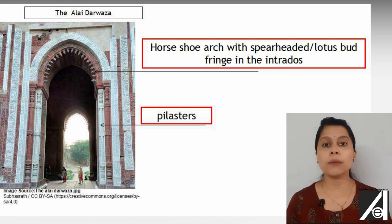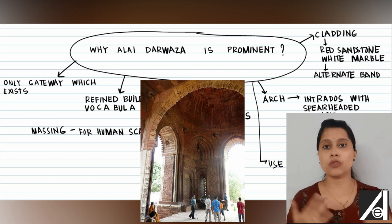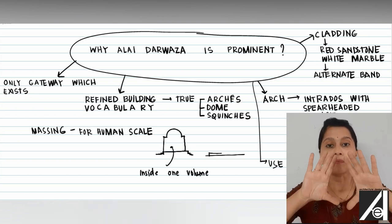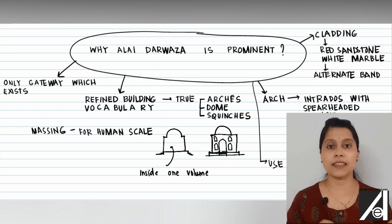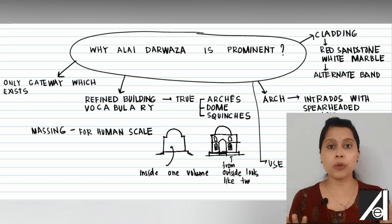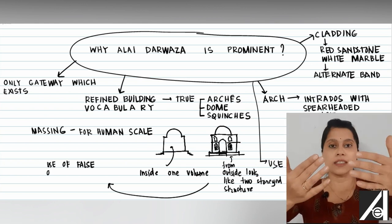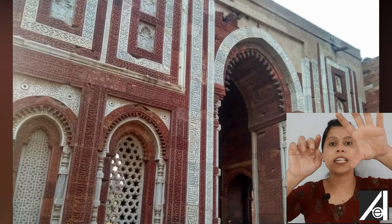You can also find the use of pilasters on the exterior. Another interesting feature is the treatment of the massing. Although the interior is a single-storey structure, from the exterior the mass has been divided into two compartments to relate to the human scale. This was achieved by adding false arches or false openings — these have the profile of arches but are not functional openings; you cannot pass through them. These false windows break down the massing and are one of the very interesting features of the Alai Darwaza.